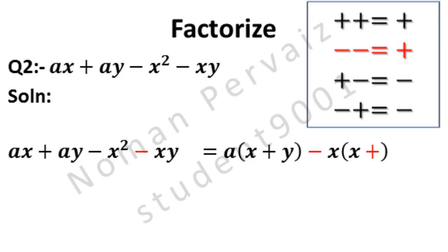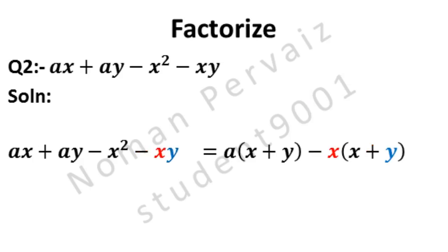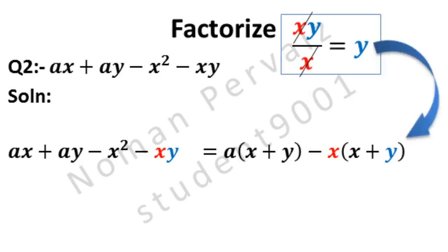The minus which is common is multiplying with this minus, and minus minus becomes plus, as shown in details. X is common, so Y will be left only. If we divide XY by X, then X is cancelled with X and Y will be left only. This Y is written in our solution.